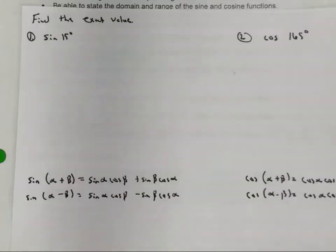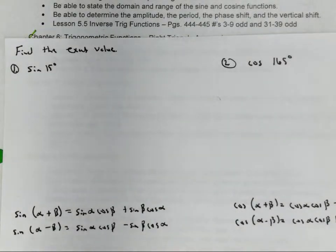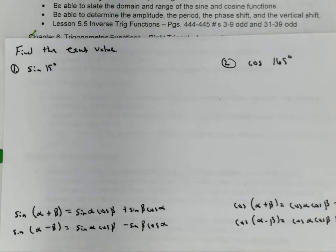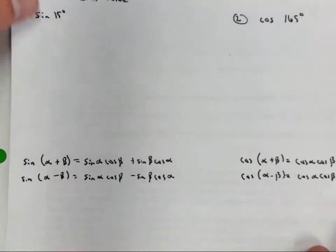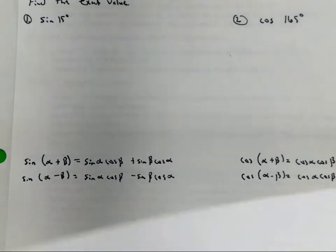There are a couple like this on your final. It says find the exact value — sine of 15. Remember, when asked for the exact value of something we didn't learn in the unit circle, we have to use those sum and difference formulas. I will give those to you. So, sine of 15 — what two numbers can I add or subtract to give me 15? 45 minus 30.